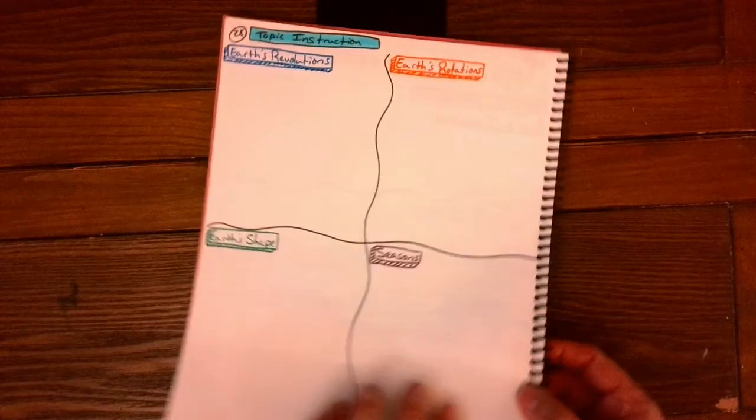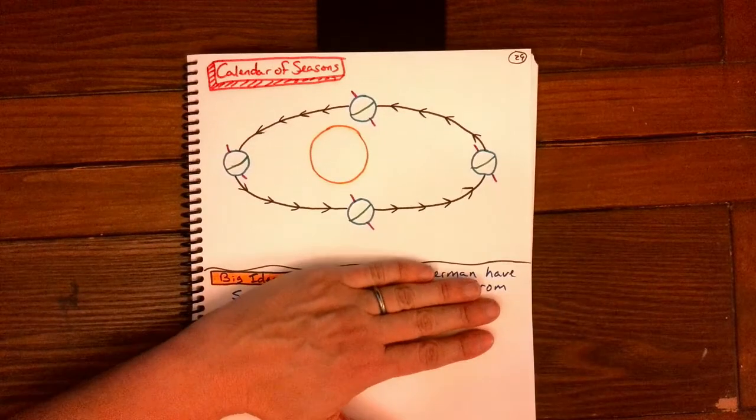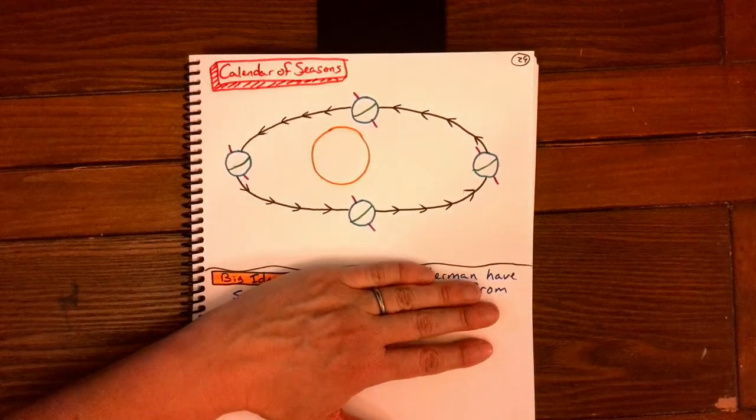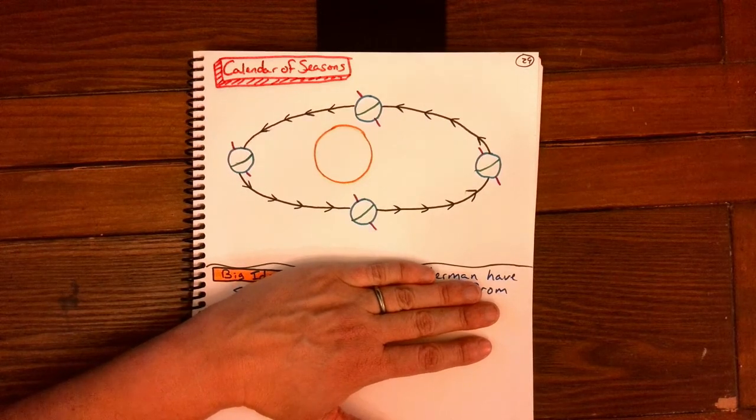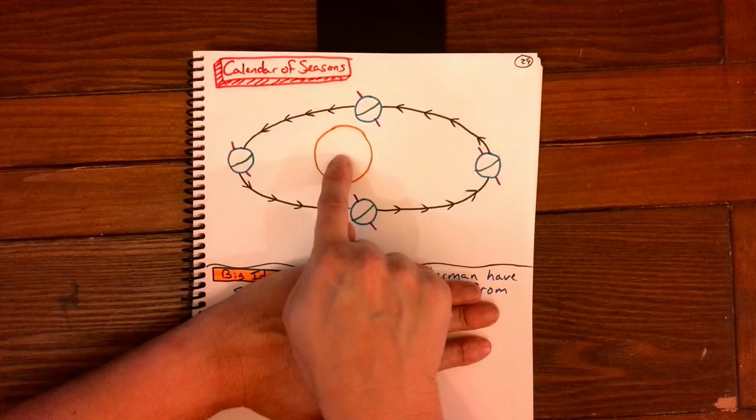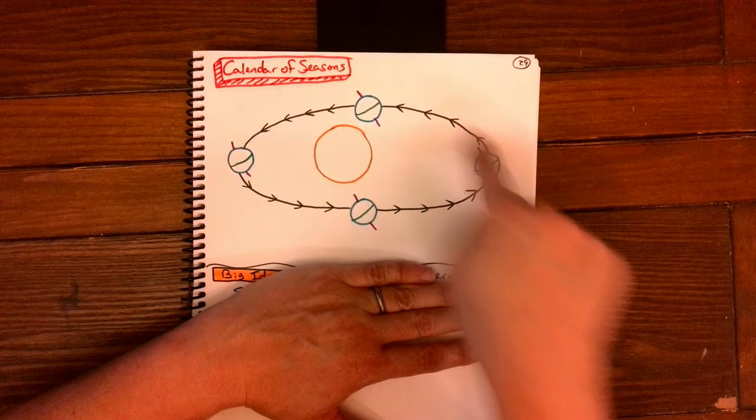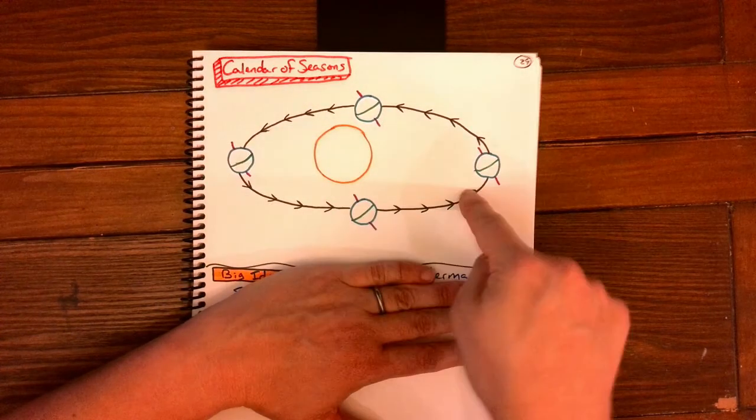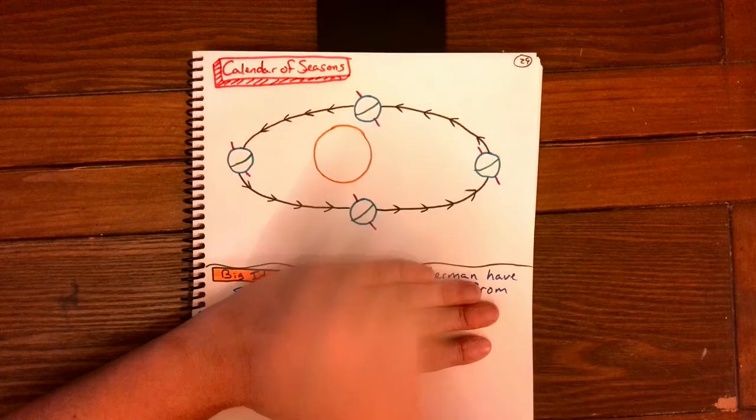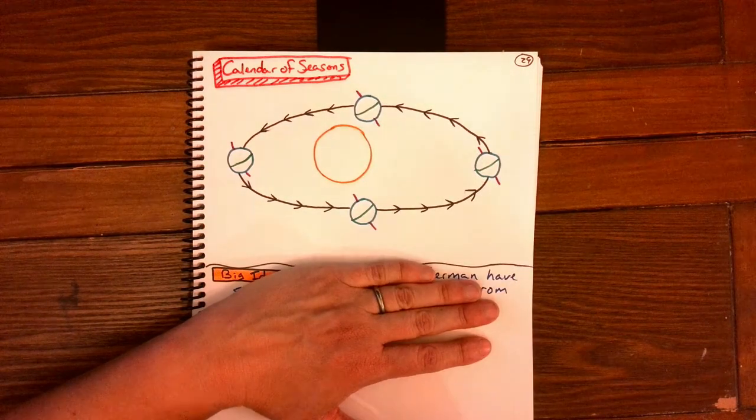Then let's take a look at page 29. Top of page 29. Please call this calendar of seasons. Here, I want you to draw this little diagram of seasons. What we have is the Sun and Earth's orbit. These little triangles here represent the direction that Earth is traveling in.